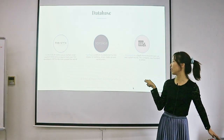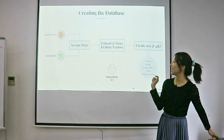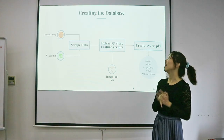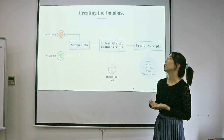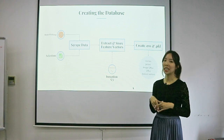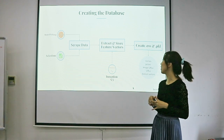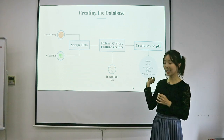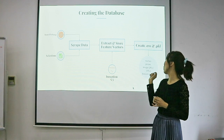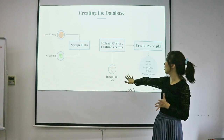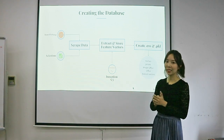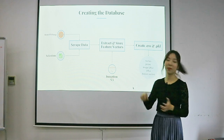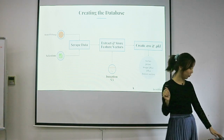I have about 10,000 products in the database. I used a combination of Beautiful Soup and Selenium to scrape the data. I save normal product information as CSV files, and for the feature vectors — which I'll explain later — I use pickle files.